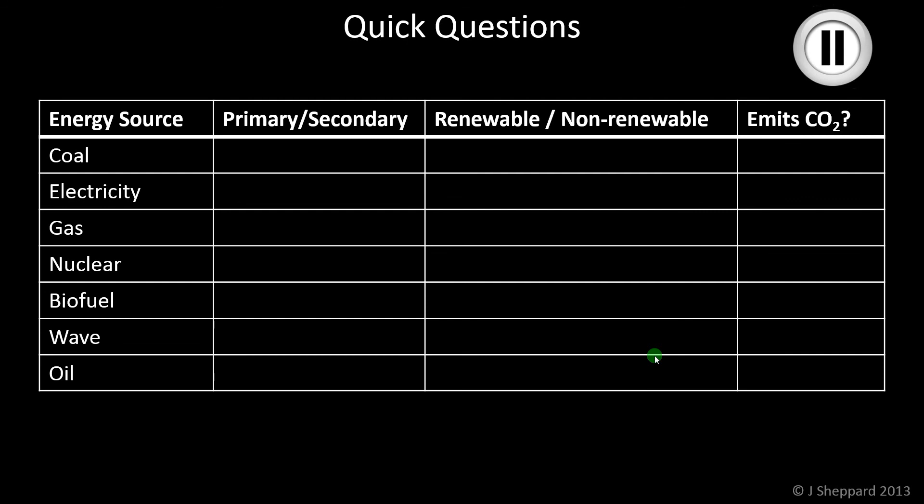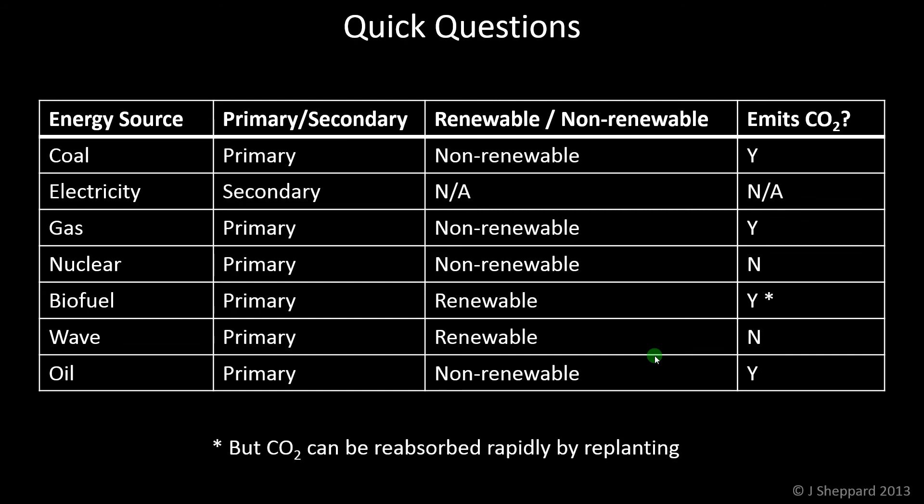I'm just going to fill all the answers in at once and talk about some of the common misconceptions. The primary and secondary column should be easy because electricity is the only secondary source we've mentioned, so all the others are primary — they're found in nature. Electricity is generated from those primary sources, so it's a secondary source. For renewable/non-renewable: the interesting one is electricity — you can't really put anything for electricity because renewable and non-renewable really only refers to the primary sources. It depends on which primary source was used to generate it, so we can't make a definite ruling.